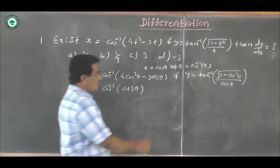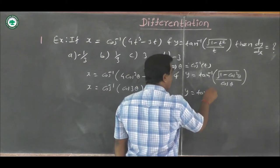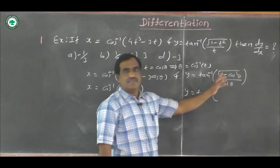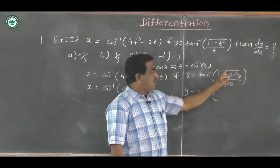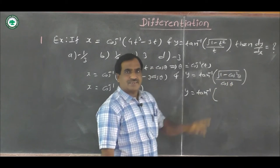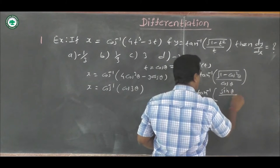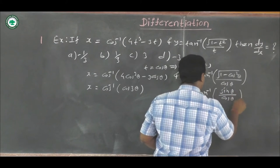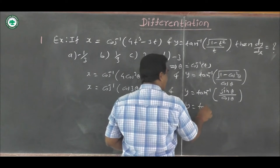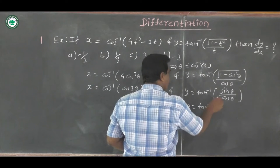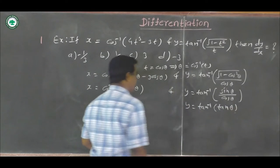Simplifying y: y equals tan inverse of √(1 - cos²θ) upon cosθ. By the first fundamental identity, 1 minus cos²θ equals sin²θ. So √(sin²θ) equals sinθ. Therefore y equals tan inverse of sinθ upon cosθ, which is tan inverse of tanθ.